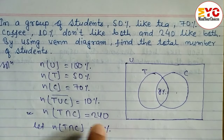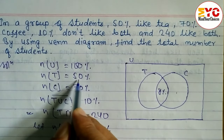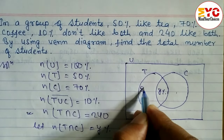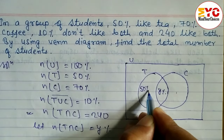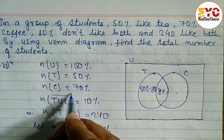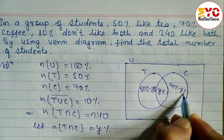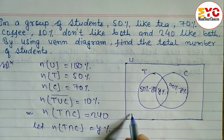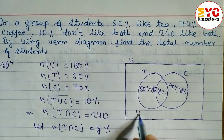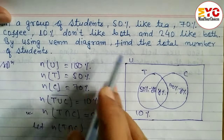Y percent of total students is equal to 240. For tea, 50% is given, so we write 50% minus Y% in the tea-only region. For coffee, 70% is given, so we write 70% minus Y% in the coffee-only region. Outside, 10% of students did not like either.